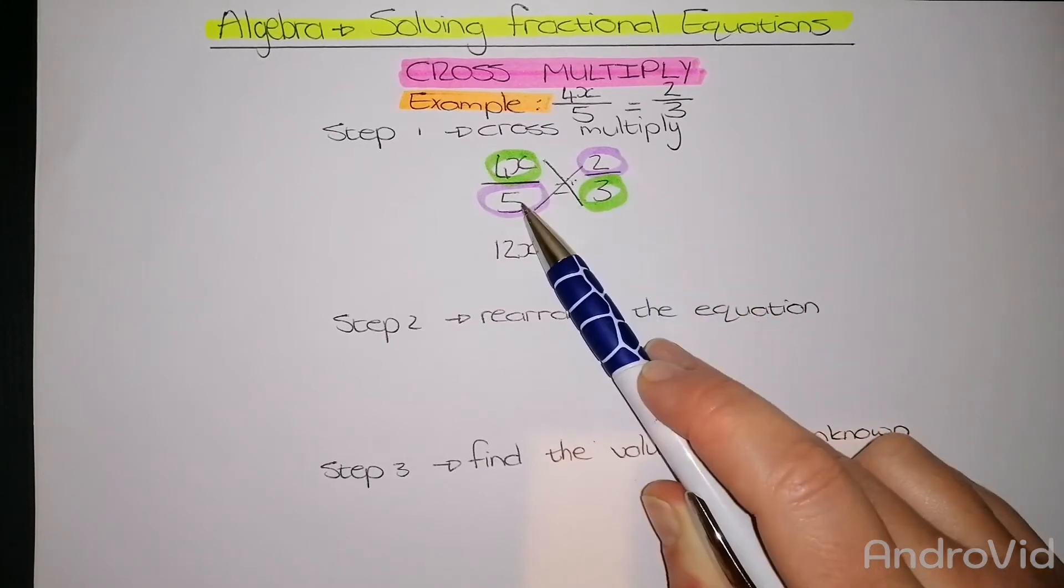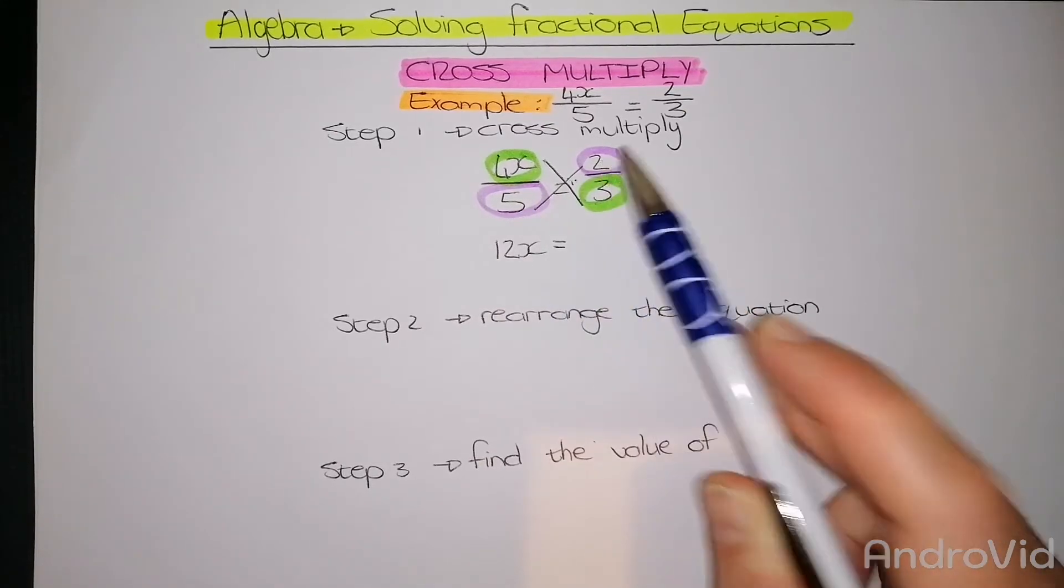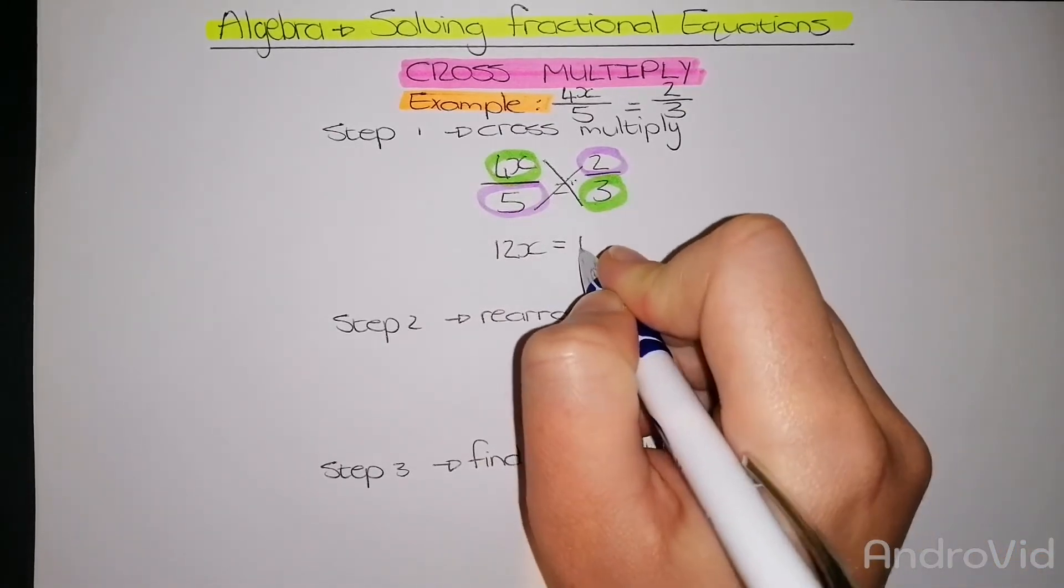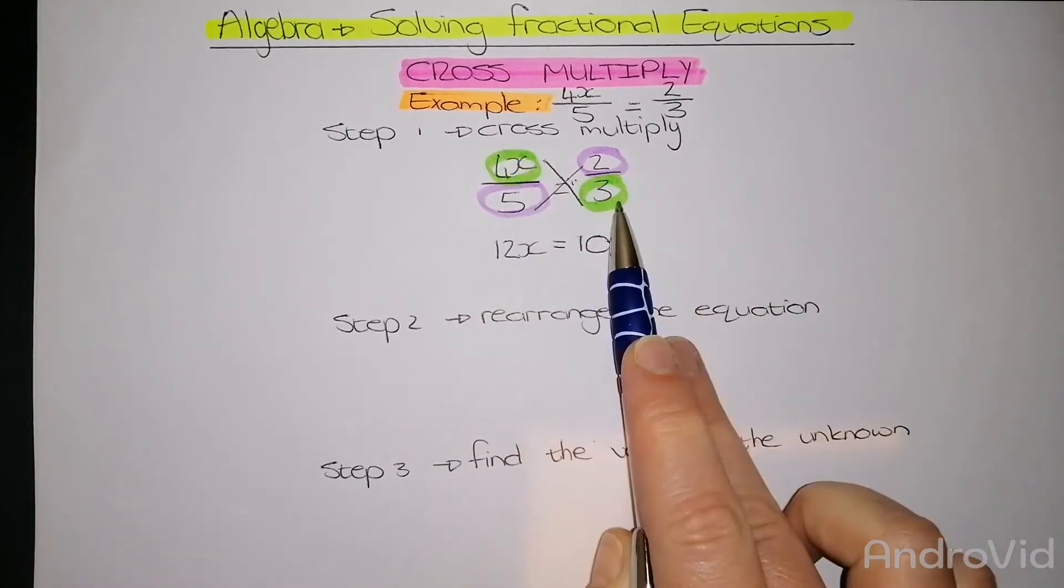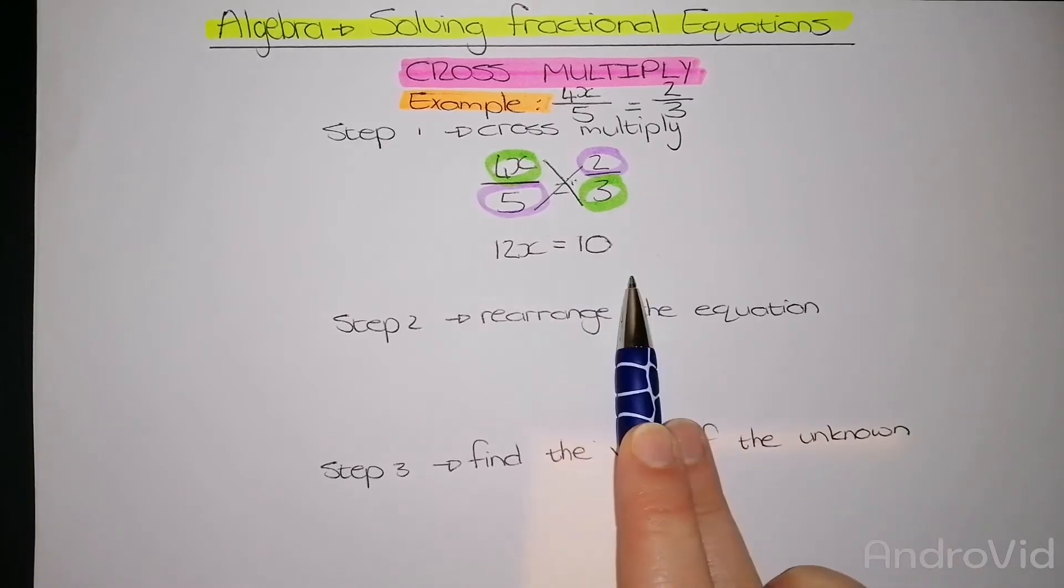So I've done the green part, now I need to do the purple part. 5 times 2 equals 10. I need to make sure that my answers for the different sides are on different sides of the equal sign.